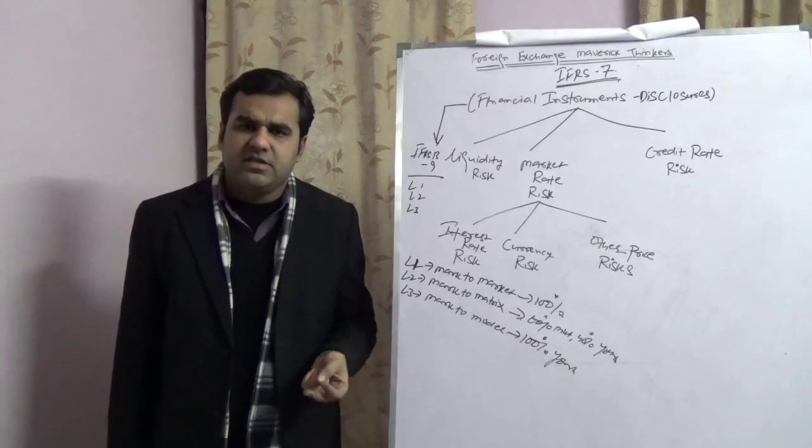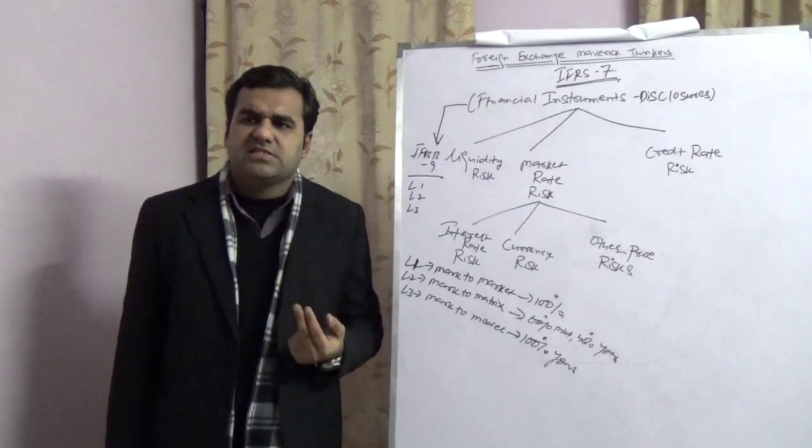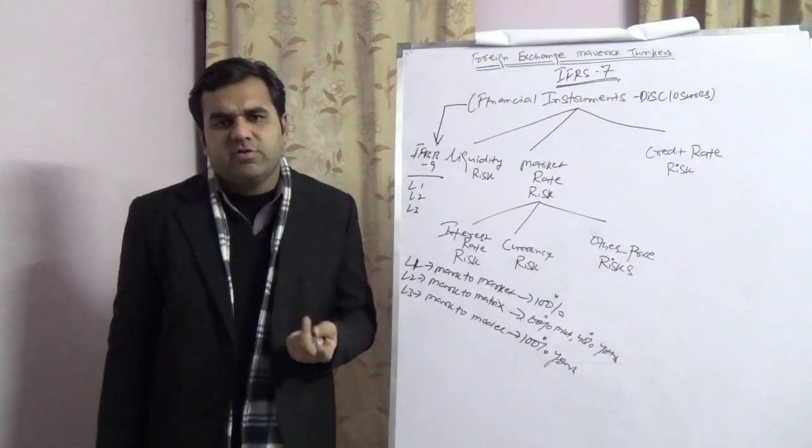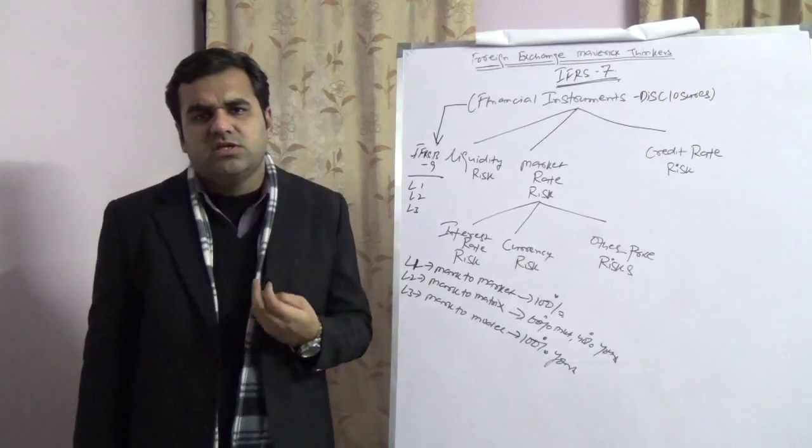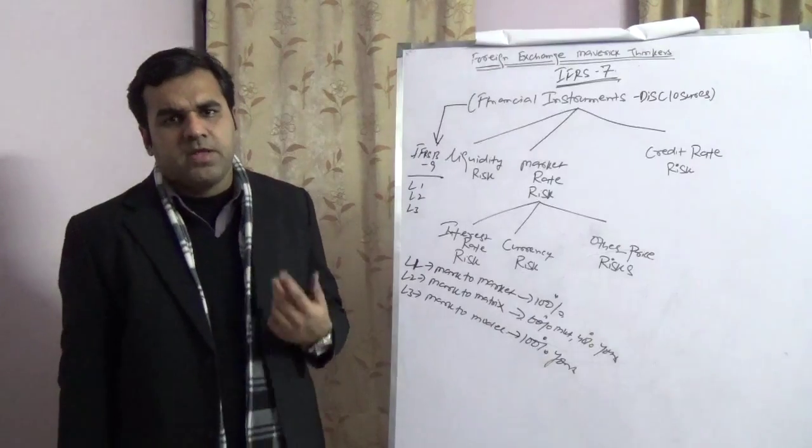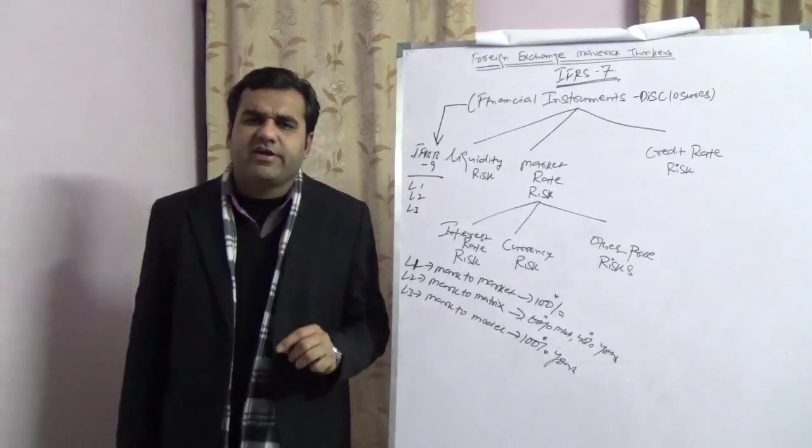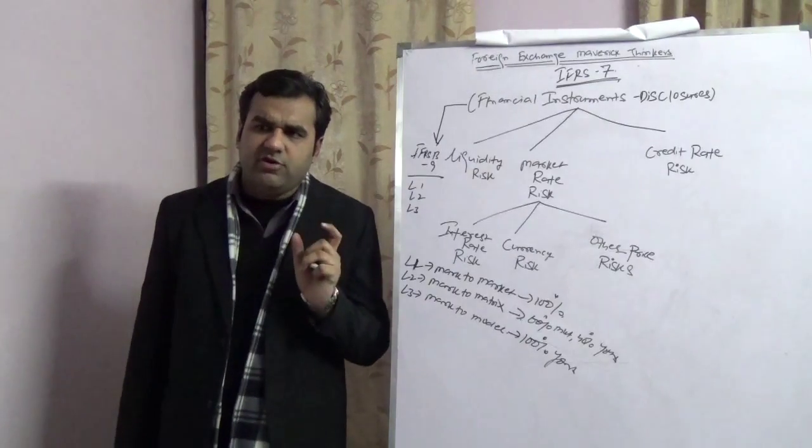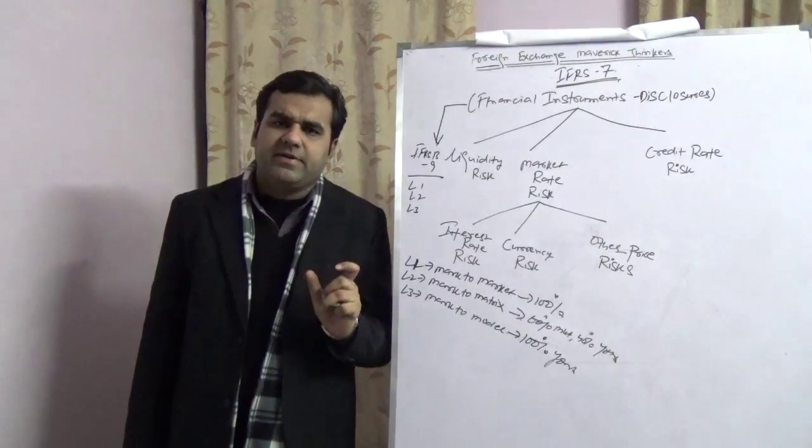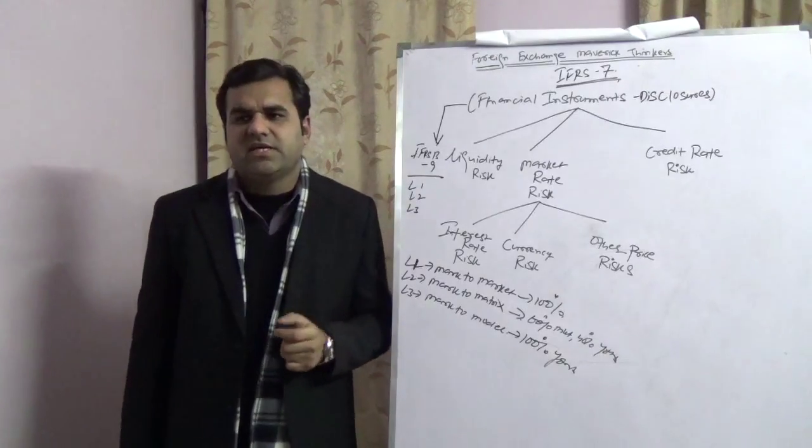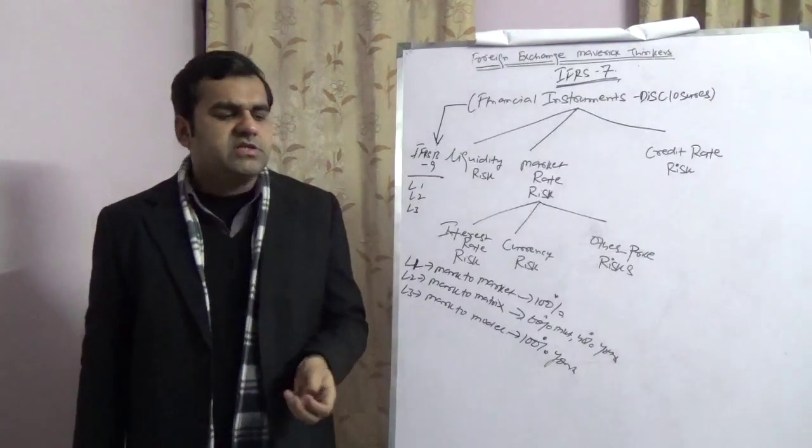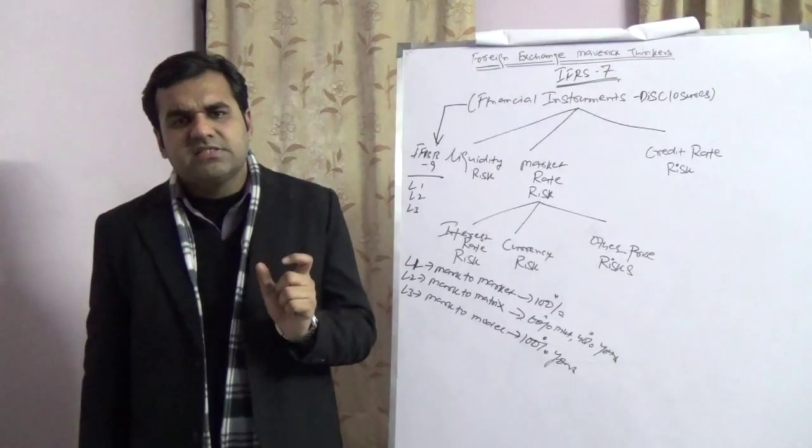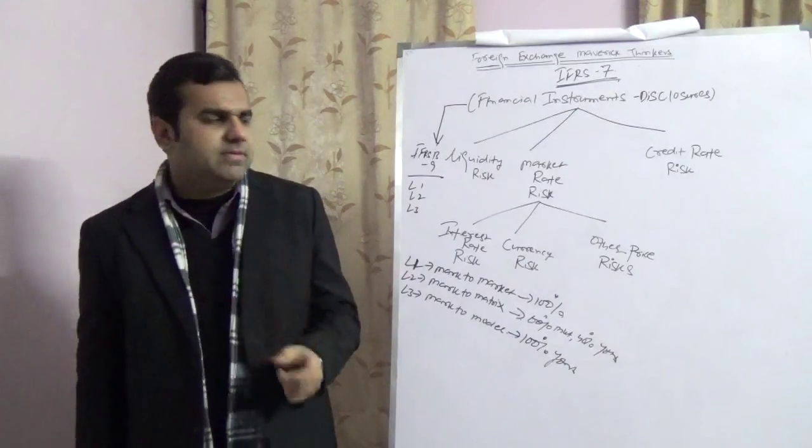If you have a foreign currency asset liability, then you are subject to foreign currency fluctuation. And that foreign currency fluctuation you can hedge using either dollarization swap or reverse dollarization swap. Dollarization swap refers to when you convert INR denominated asset and liability into foreign currency denominated asset and liability. Reverse dollarization swap refers to when you convert the foreign currency asset and liability into INR denominated asset and liability.